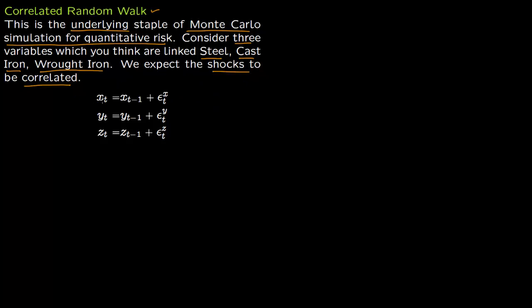So say this is steel. XT is the steel. This is the random walk associated with steel, this is the random walk associated with cast iron, and this is the random walk associated with wrought iron. This is standard random walk model. The only difference is now these three are correlated.